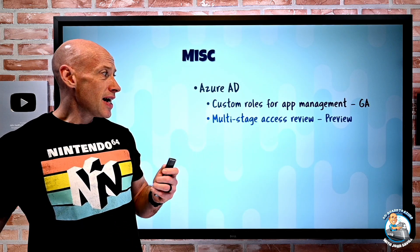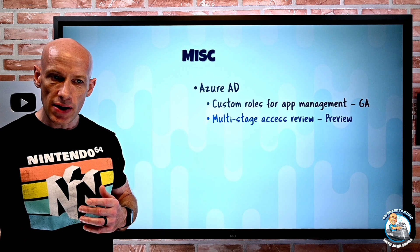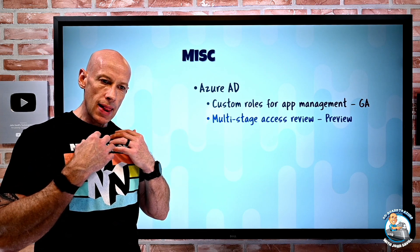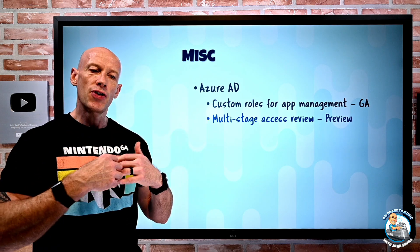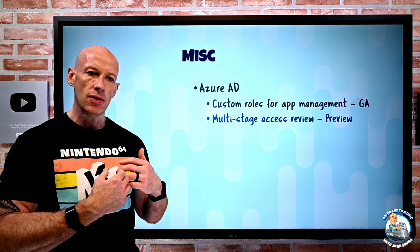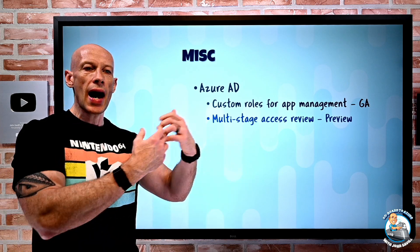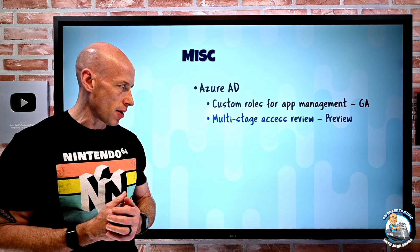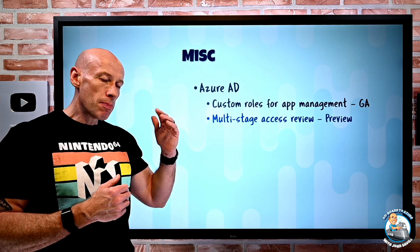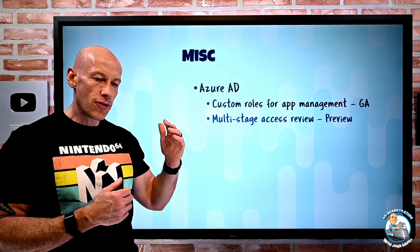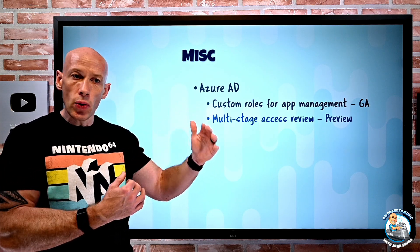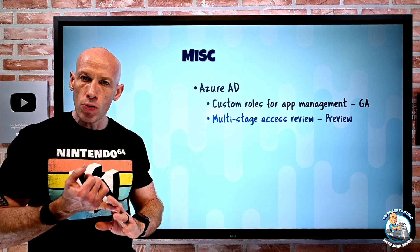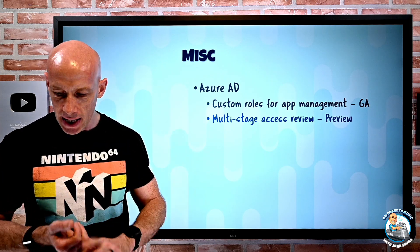Multi-stage access reviews are in preview. Access reviews let me — as the name suggests — review access to things like group membership, app assignment, and role assignment. What they now have is the ability to have an additional stage or two additional stages for certain types of groups and applications.